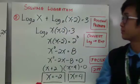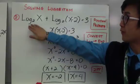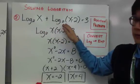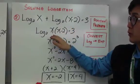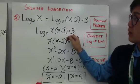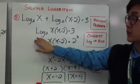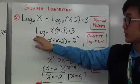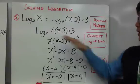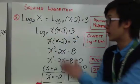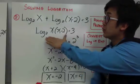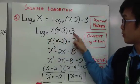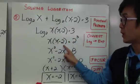Now let's work on the second example, where we're still using the logarithm property. We use the addition property to combine logarithm of x base 2 and logarithm of x minus 2 base 2, giving logarithm of x times x minus 2 base 2 equal to 3. Since there is no logarithm on the right side, we cannot cancel. Instead, we convert the logarithmic equation into an exponential equation: 2 raised to 3 equals x times x minus 2.